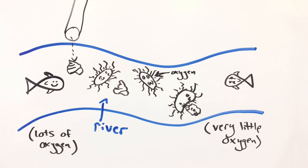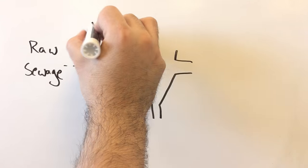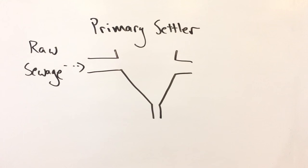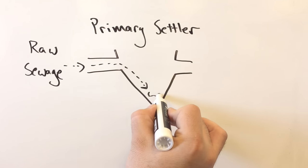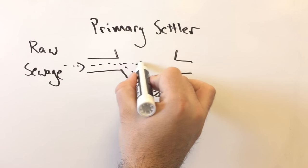The BOD is removed from sewage at wastewater treatment plants. Remember how sewage is made up of solid and liquid parts? The first step is to separate these.